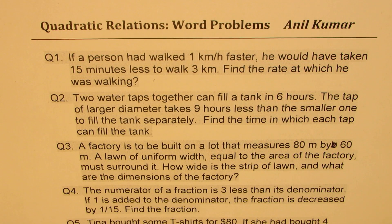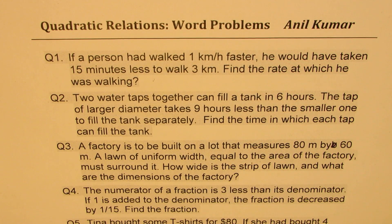Question number one: If a person had walked one kilometer per hour faster, he would have taken 15 minutes less to walk 3 kilometers. Find the rate at which he was walking. Question two: